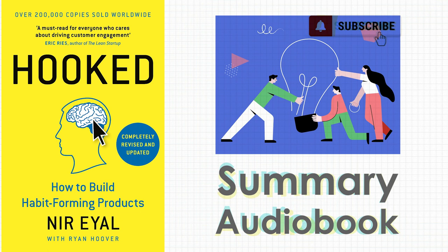The last step of the Hook Model is investment. Unlike action, investment doesn't provide immediate gratification — it promises future rewards. The more users invest time and effort into a product, the more they value it. This is called the IKEA effect: IKEA customers assemble furniture themselves, making them emotionally attached to it. We also tend to avoid conflicting ideas — although our minds are supposed to reject spicy food or alcohol, seeing others enjoy them leads us to develop a taste for them over time.